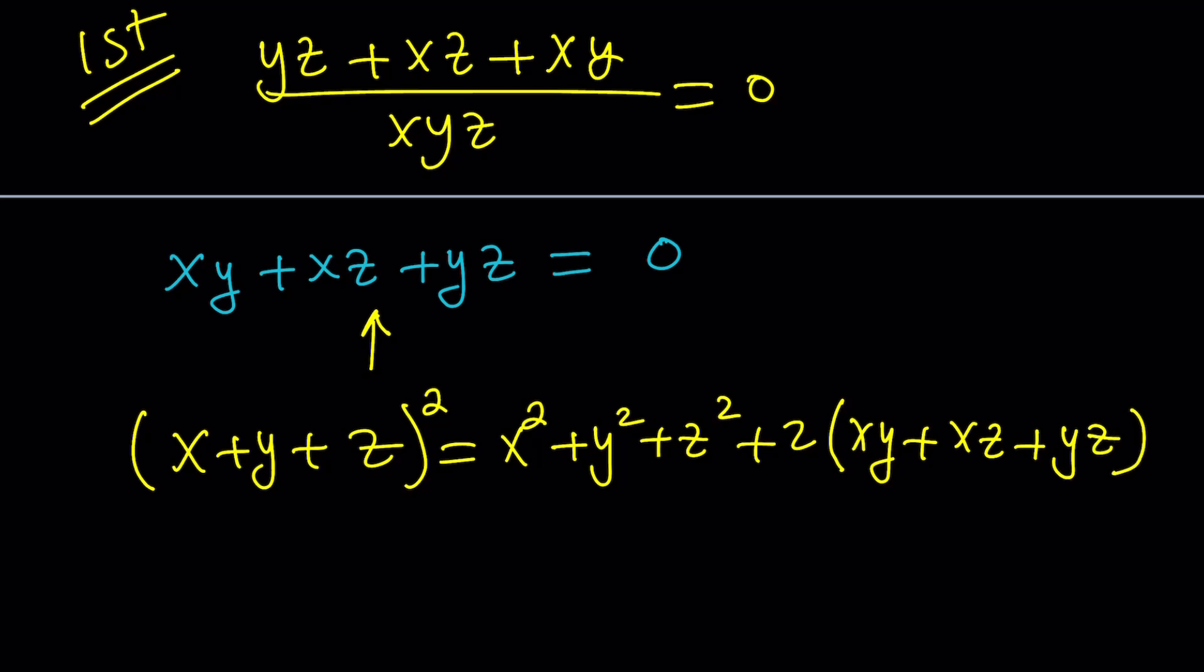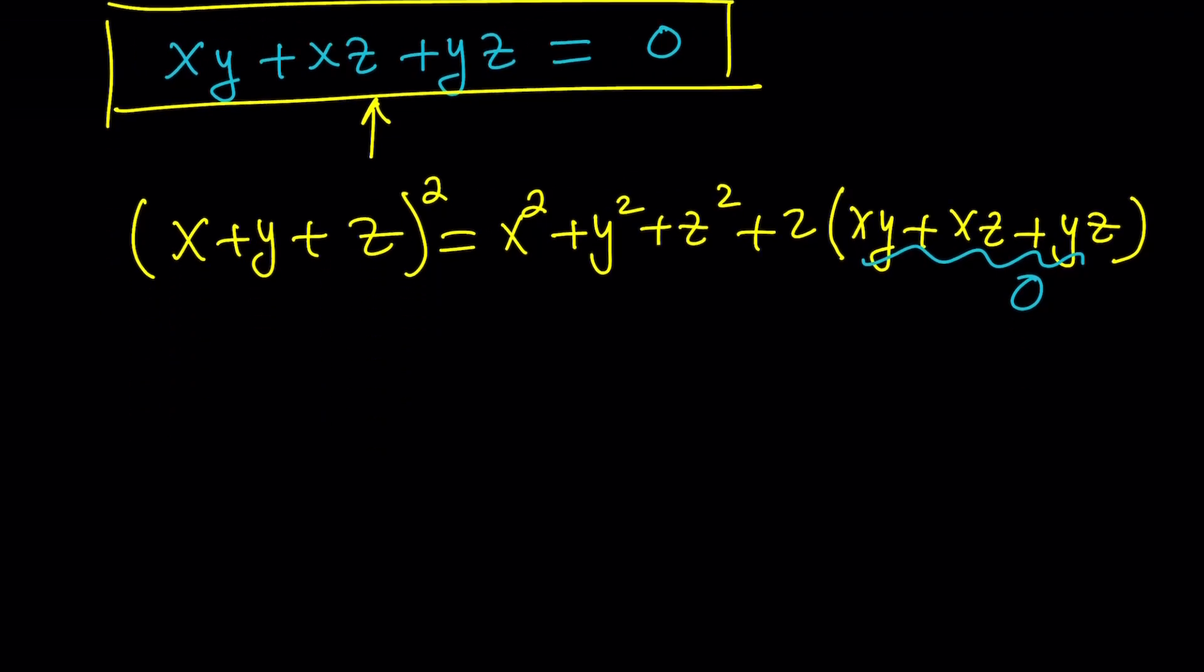Now, this part is important. We do know that xy plus xz plus yz is equal to 0 from 1 over x plus 1 over y plus 1 over z equals 0. So this is supposed to equal 0, which means 2 times 0 is 0, and this gives us the following: x plus y plus z squared equals x squared plus y squared plus z squared.